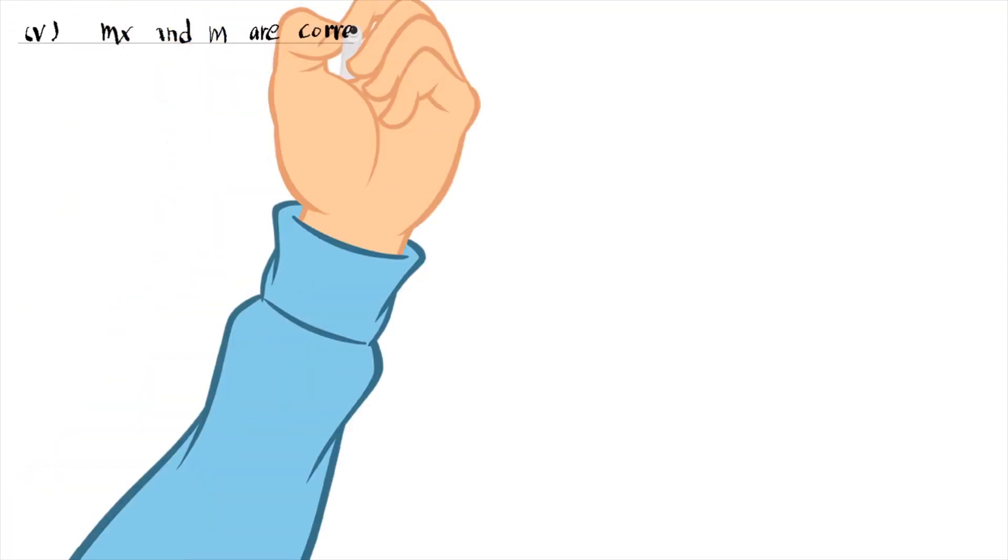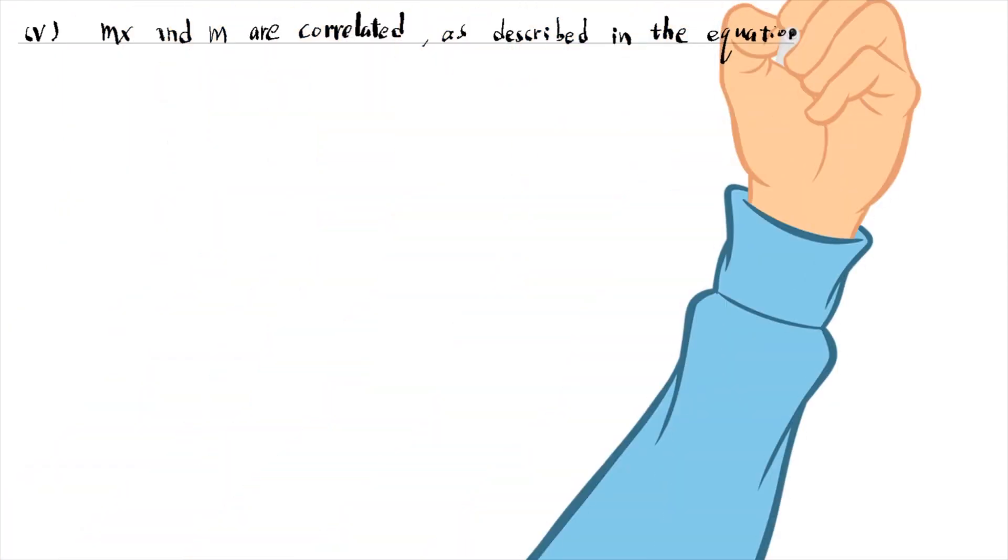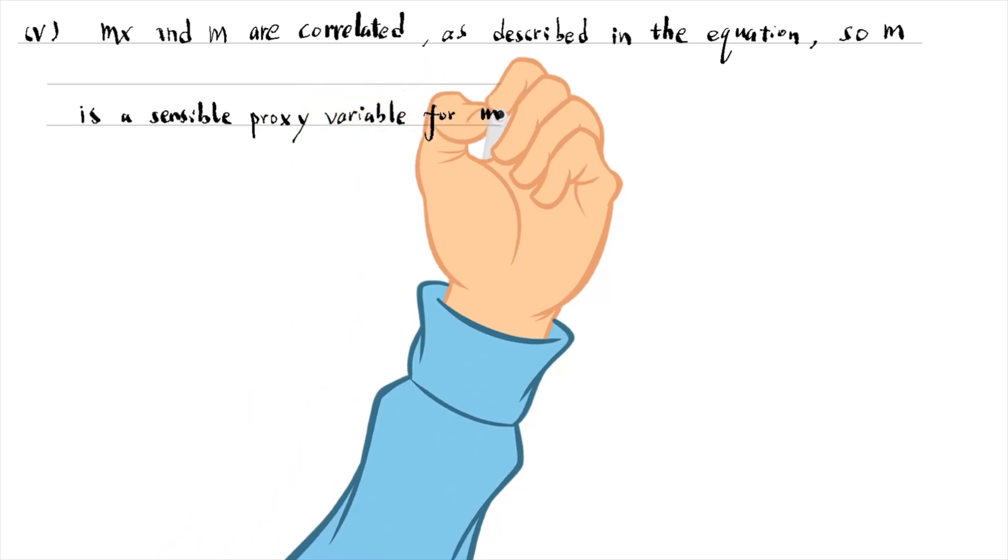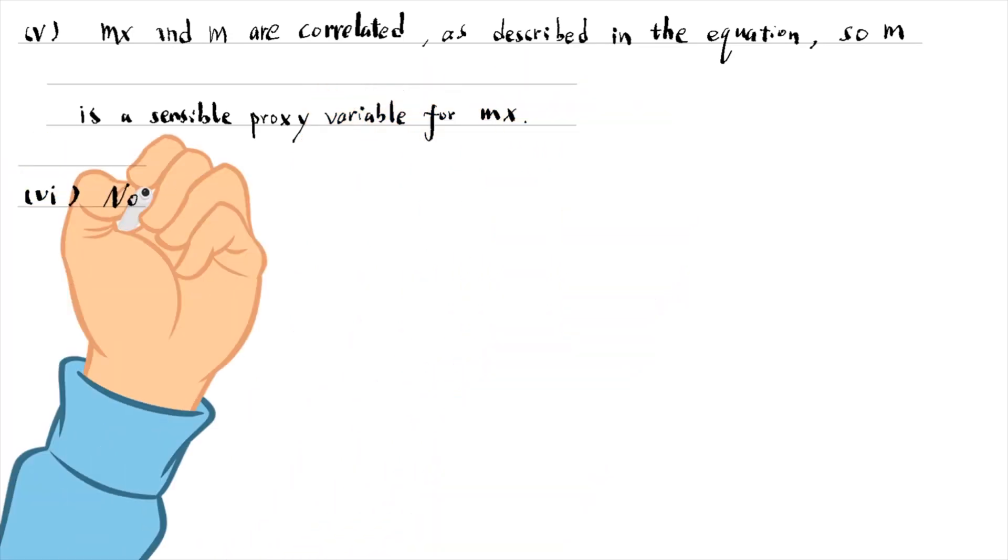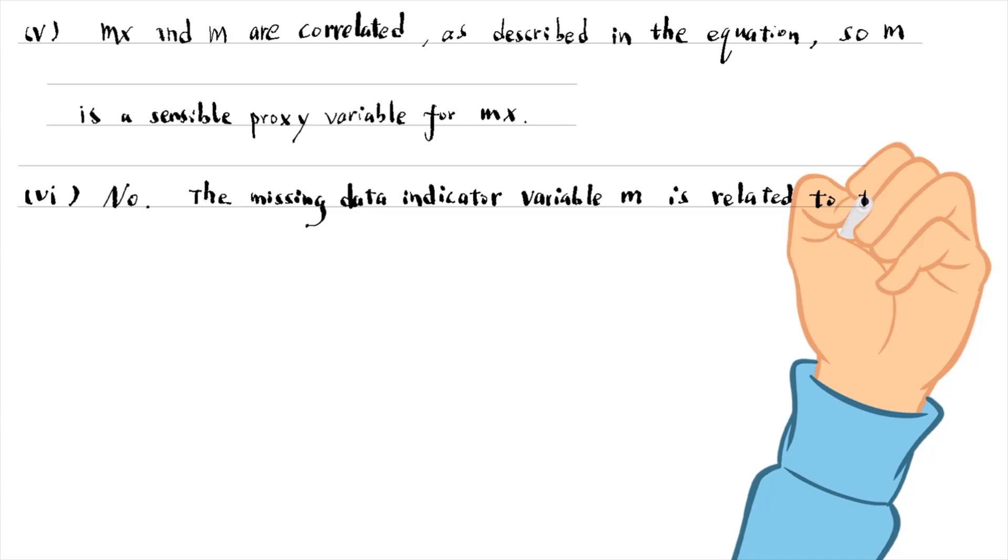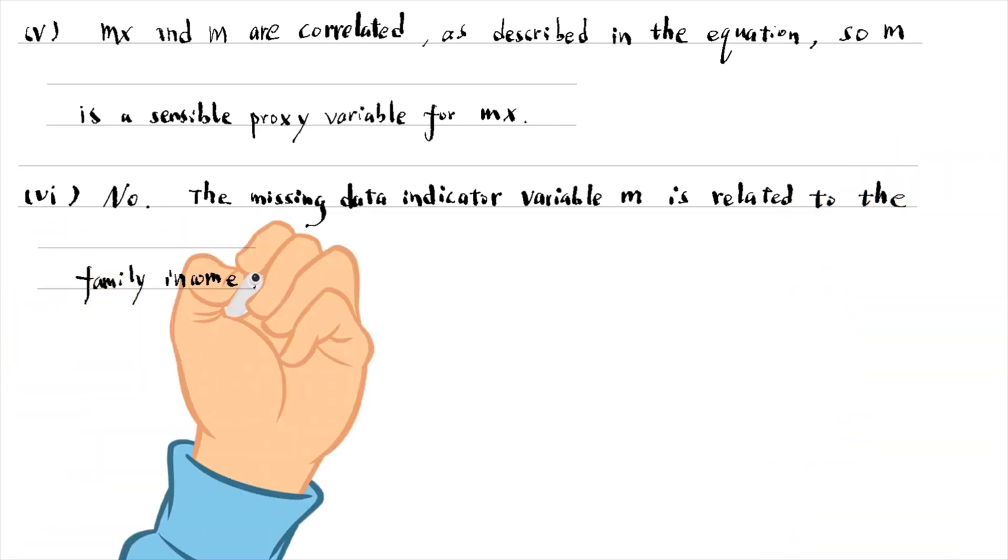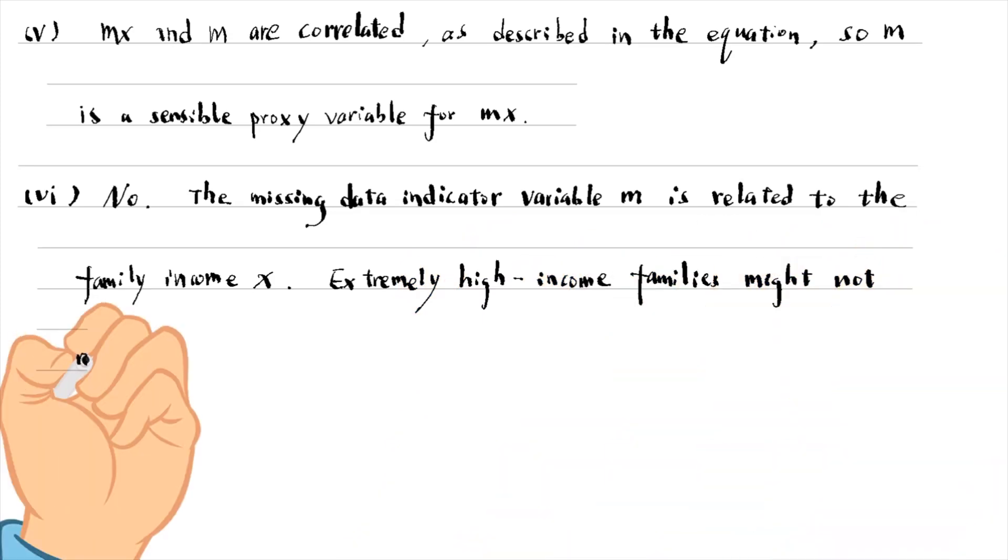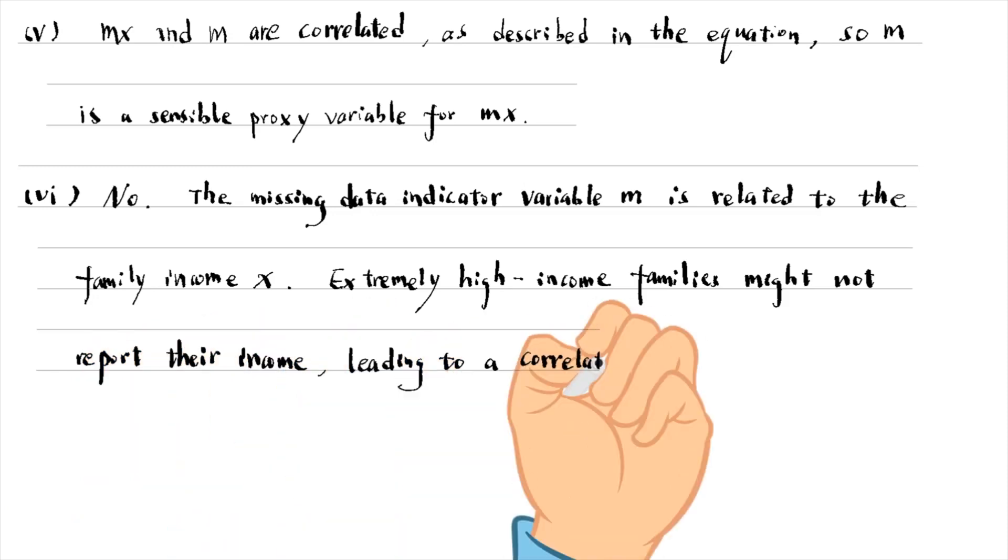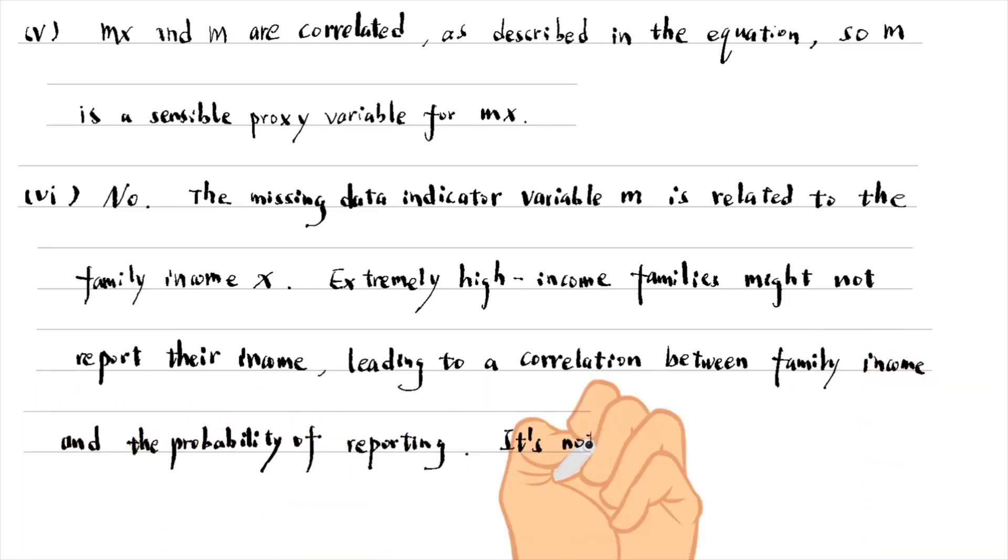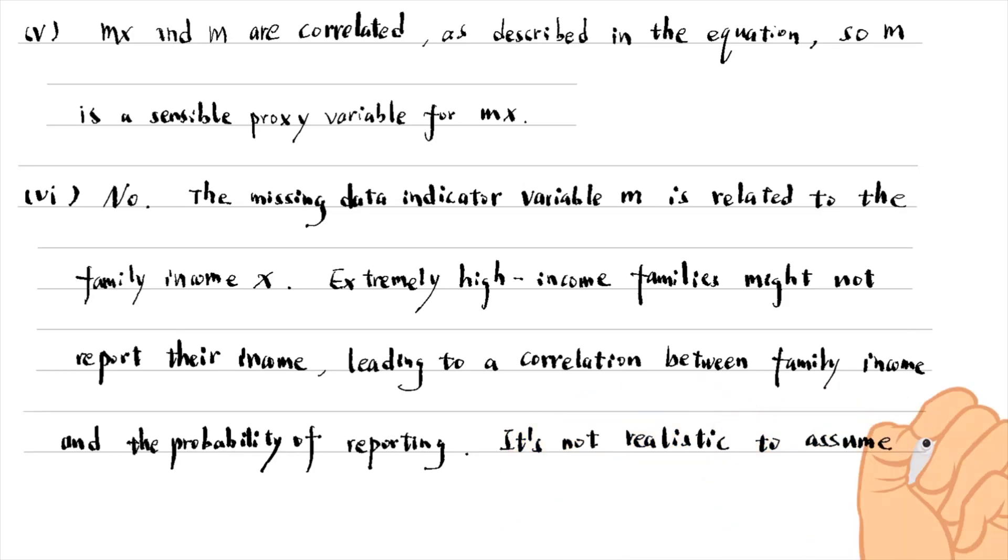For part 5, mx and m are correlated, as described in the equation, so m is a sensible proxy variable for mx. For part 6, my answer is no. The missing data indicator variable m is related to the family income x. Extremely high income families might not report their income, leading to a correlation between family income and the probability of reporting. It is not realistic to assume that m and x are independent.